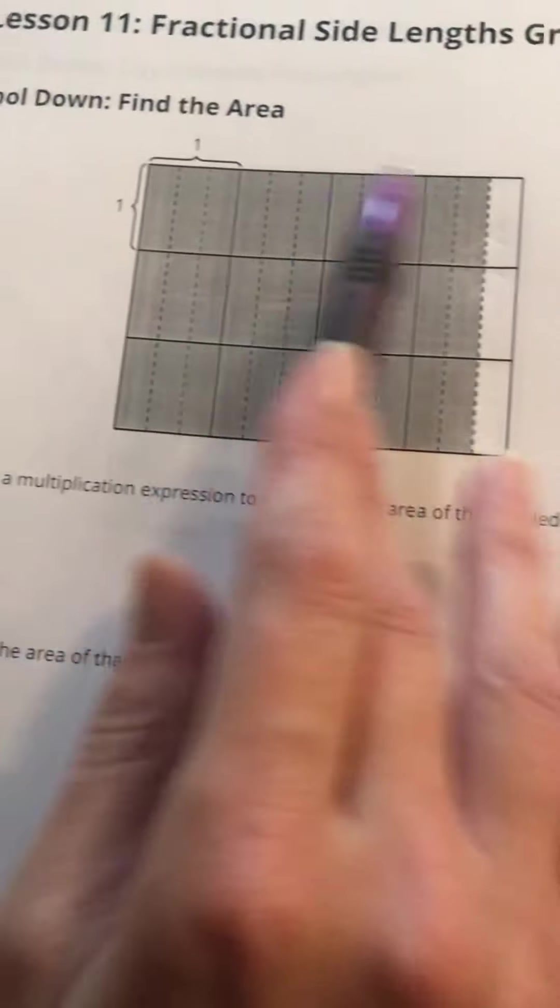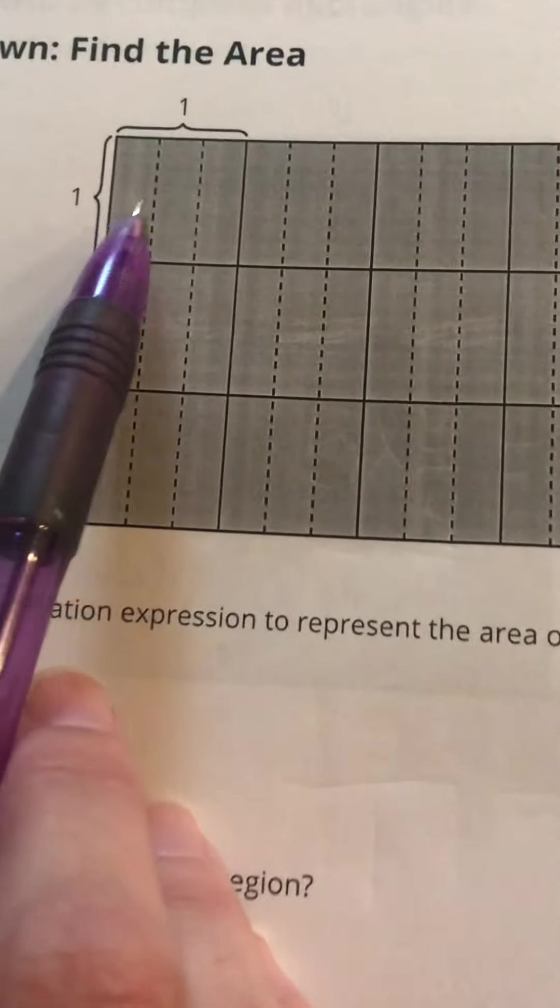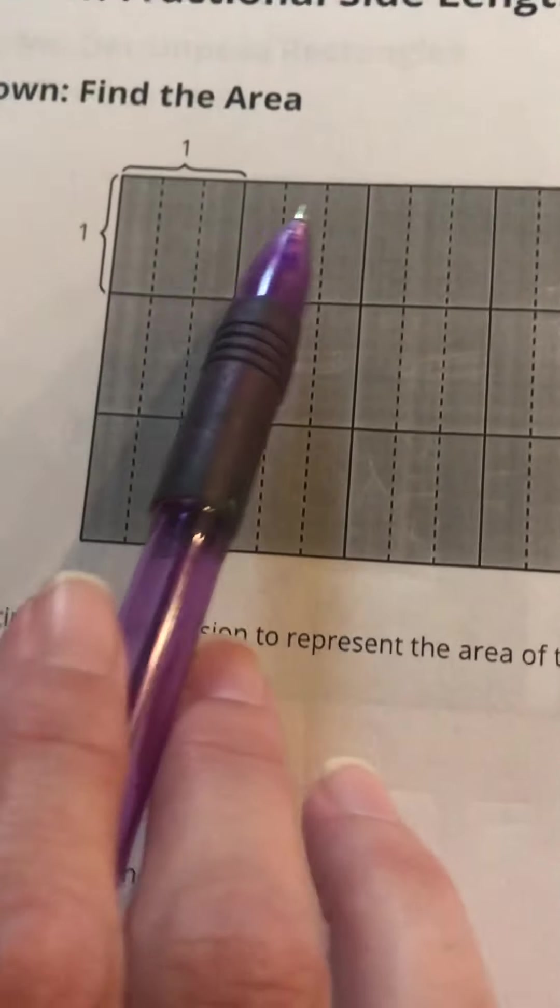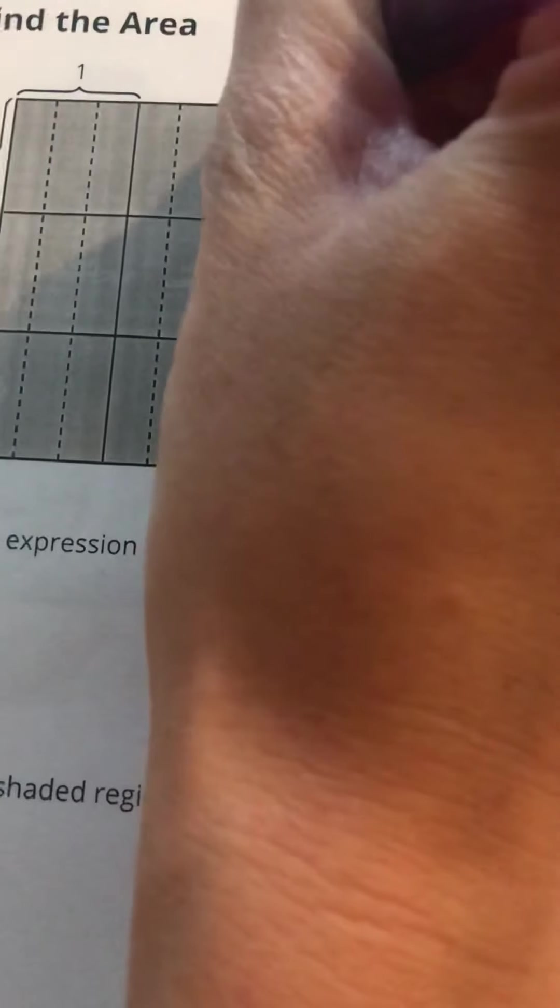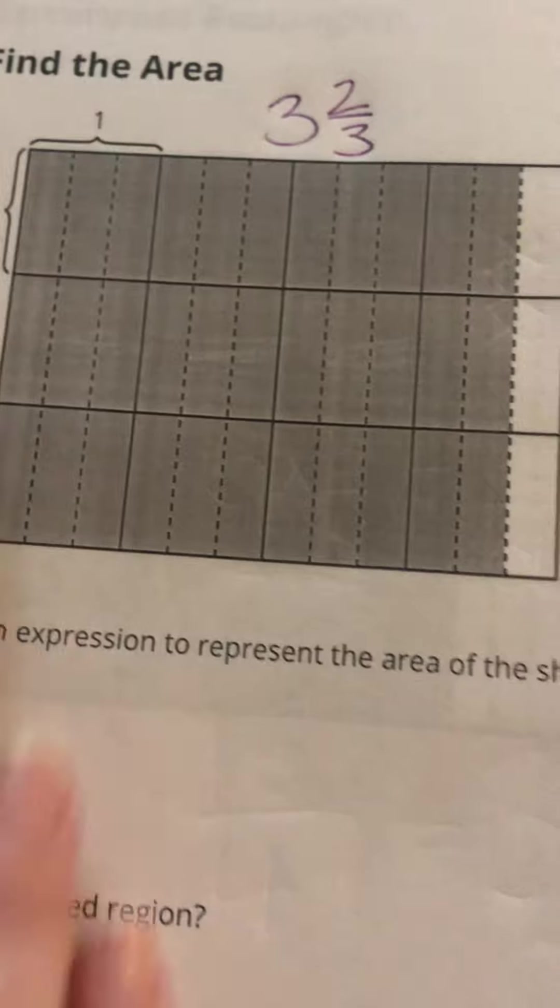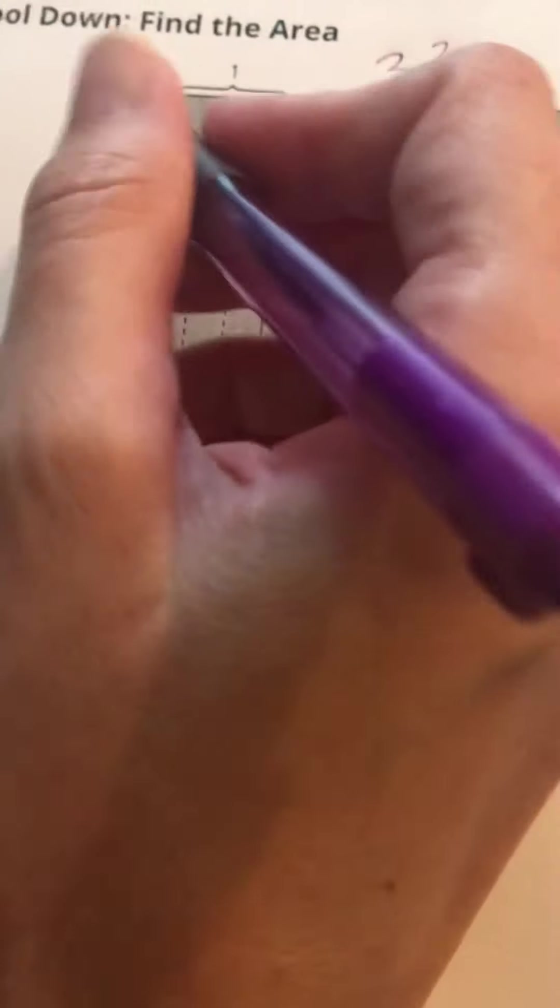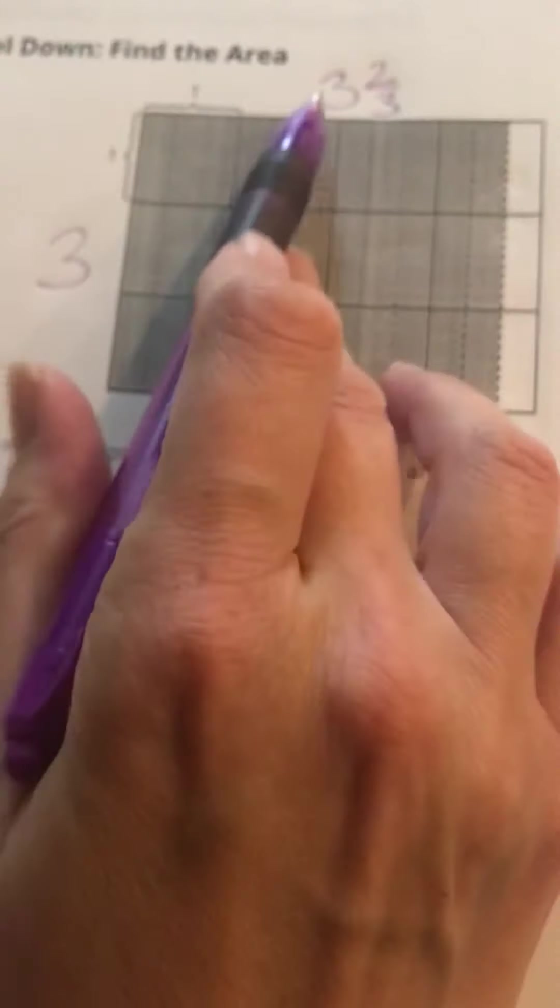All right, and then on lesson 11 we have another figure, but this time they didn't give us the side lengths. But I can write these in a couple of different ways. So I've got 1, 2, 3 here and then 2/3, so 3 and 2/3 would be my length. And then I've got 1, 2, 3 here.